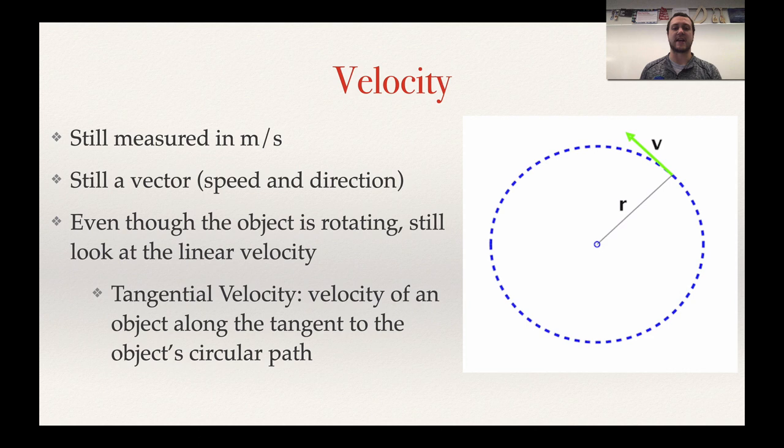As it rotates, based on that velocity vector, we would say that this object is rotating counterclockwise because the vector arrow itself is pointing more to the left, so we'd be able to determine that direction of rotation. And as it spins faster, obviously that velocity is going to increase, and as it spins slower, that velocity is going to decrease. So we get a rotating motion.